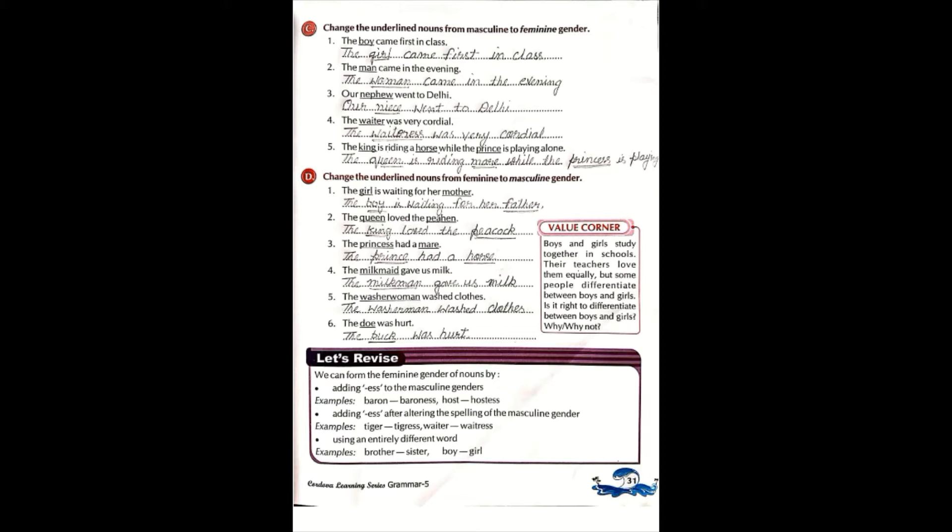First masculine, feminine, common, and neutral. Masculine denotes male persons. Common we can use for both boy or girl, male or female. Neutral is for non-living things. We can use neutral gender like table, chair, bed, phone. These are neutral genders.